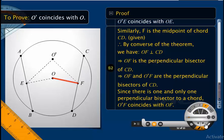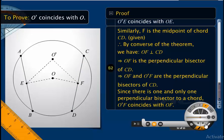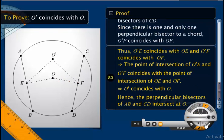Similarly, O'F bisects chord CD and F is the midpoint of CD. Therefore, by the converse of the theorem, O'F is perpendicular to CD. That means O'F and OF are both perpendicular bisectors of CD. But since there can be one and only one perpendicular bisector to a chord, O'F coincides with OF. This implies that the point of intersection of O'E and O'F coincides with the point of intersection of OE and OF. Therefore, O' coincides with O, and hence we prove that the perpendicular bisectors of AB and CD intersect at the center O.